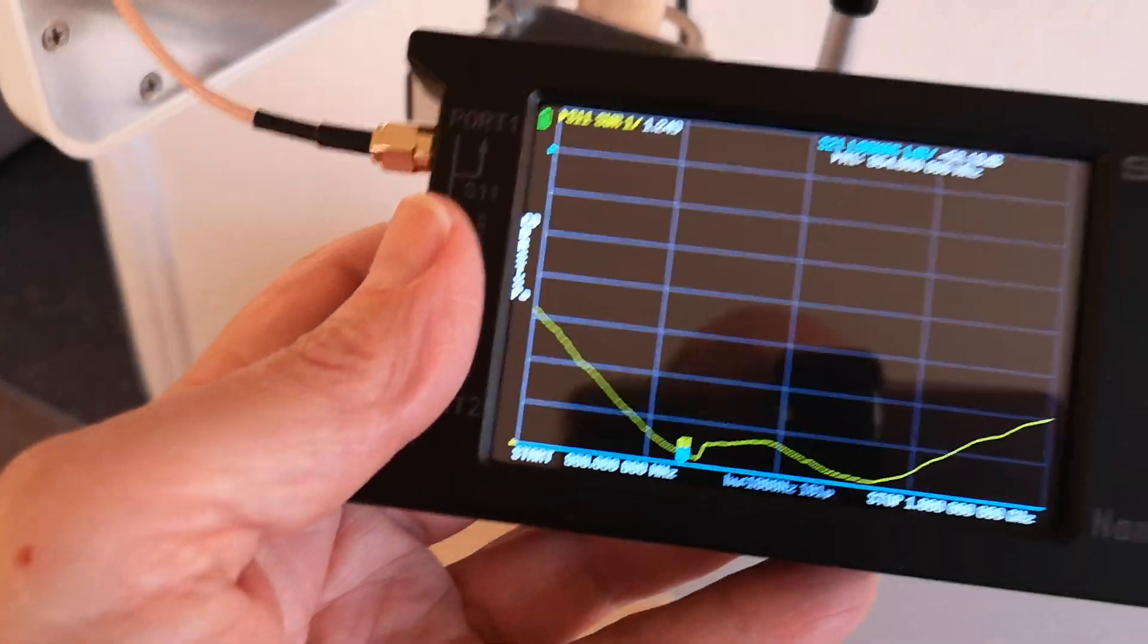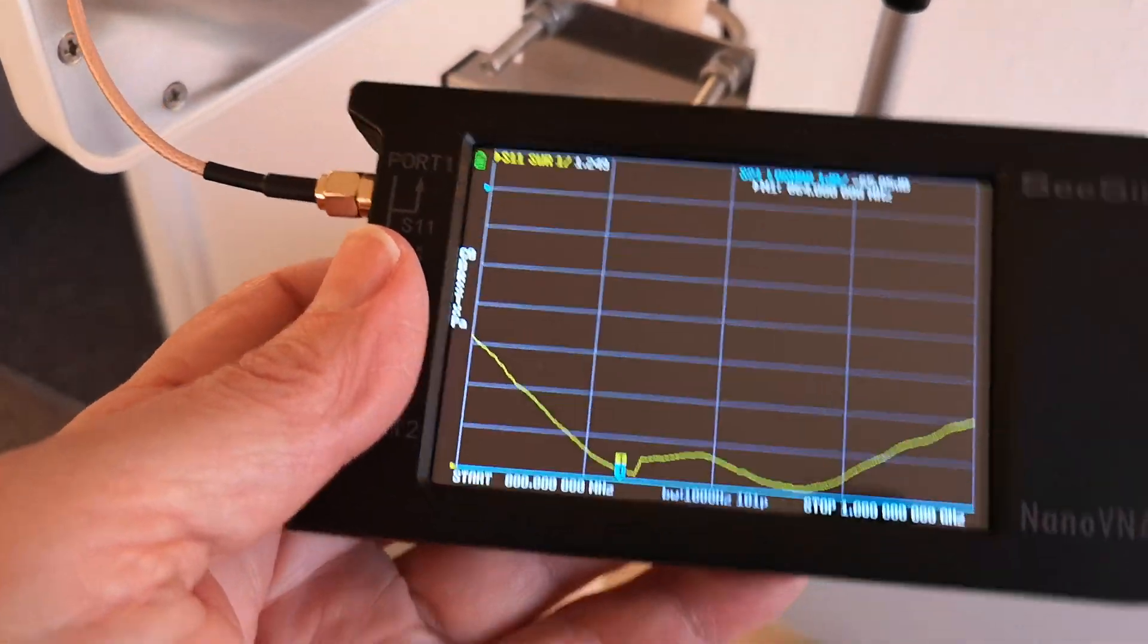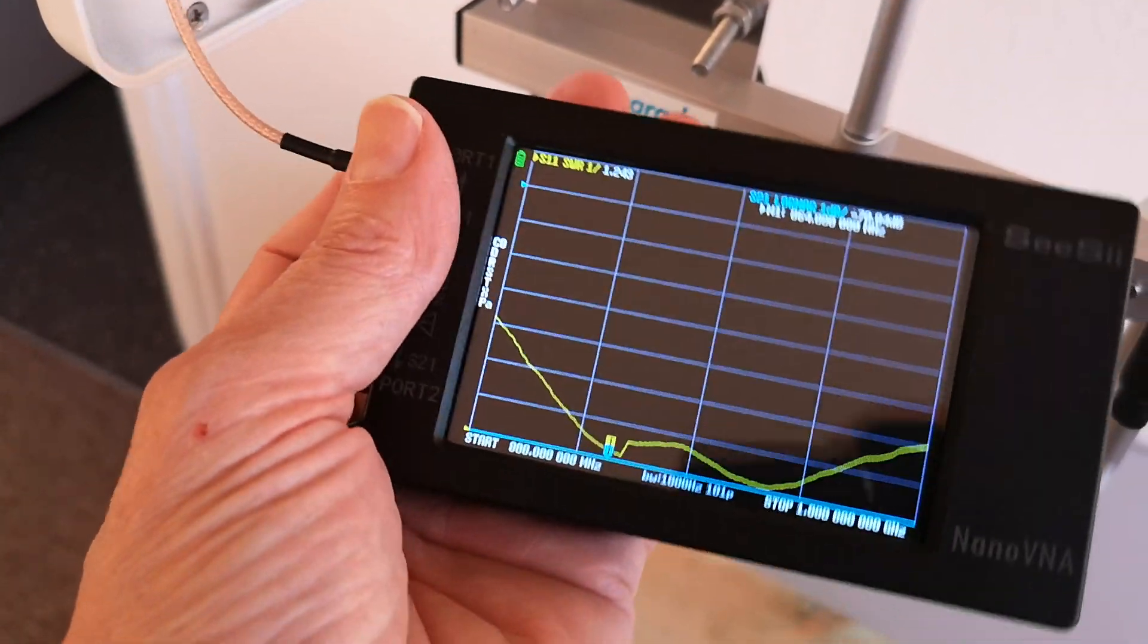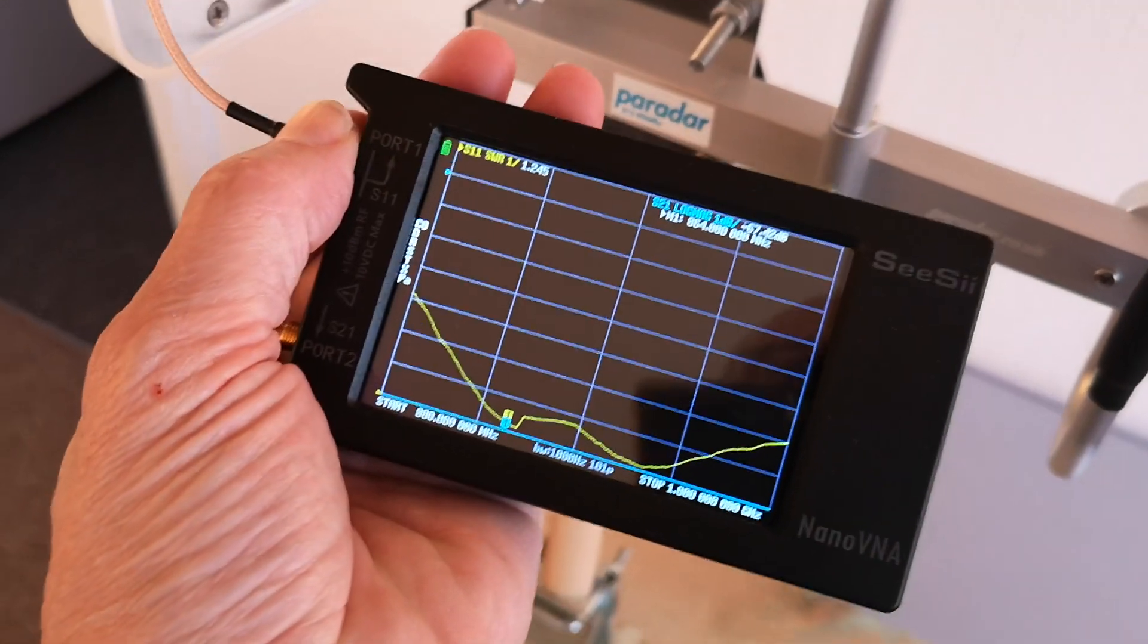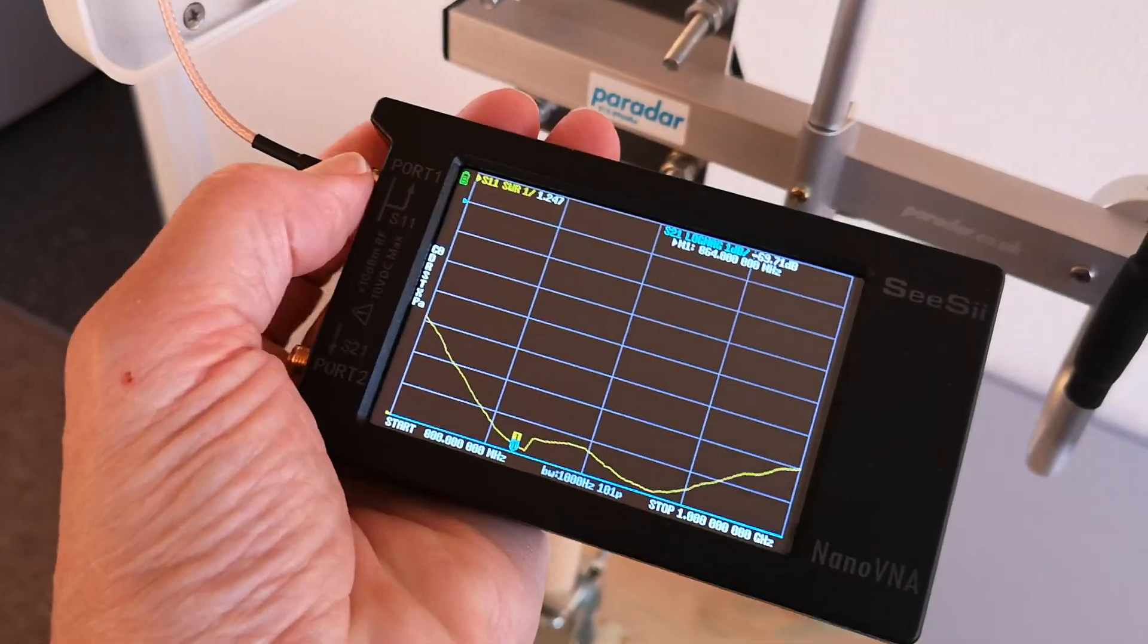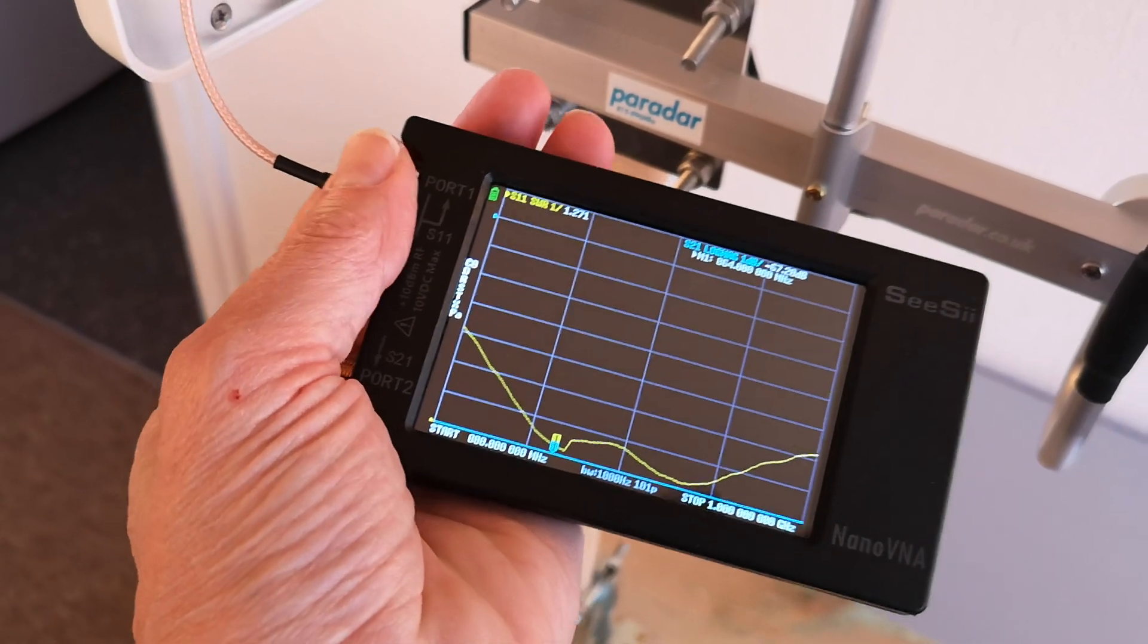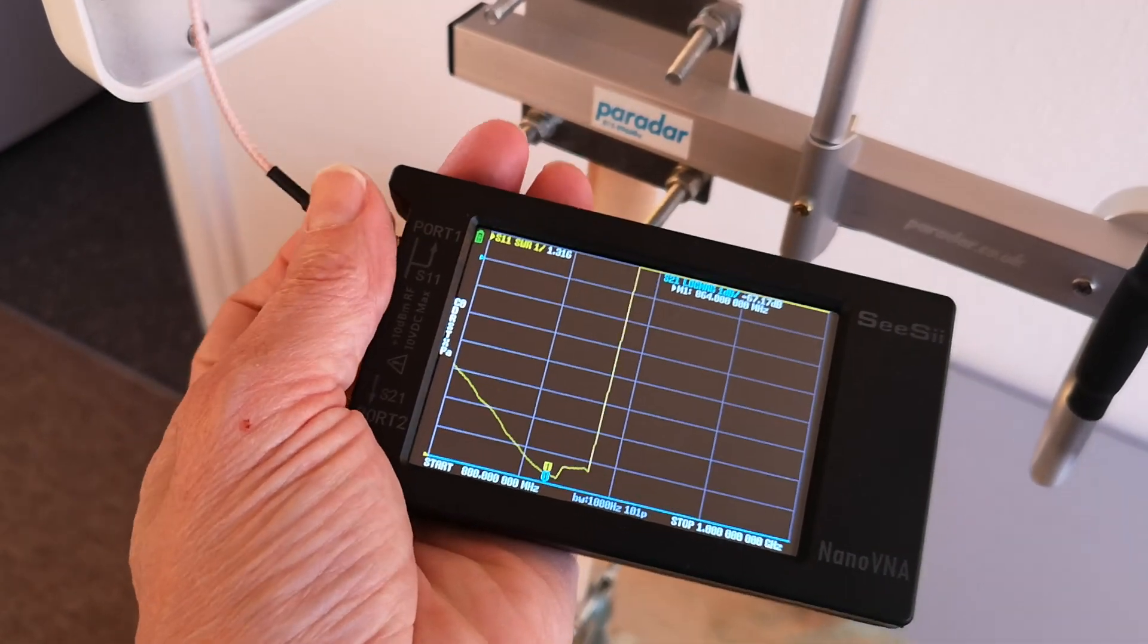So that's a nice match at 868 MHz. Very nice. Better than some of those other outdoor antennas I was testing, which are way off. This is really, as you can see, designed for 868 MHz.